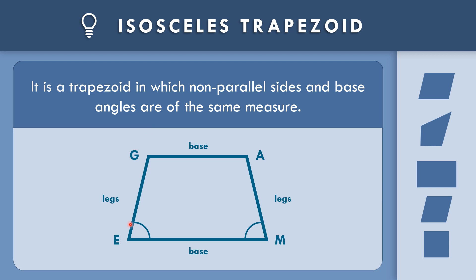The base angles are angle E and angle M — angle E is equal to the measurement of angle M. Another pair of base angles: angle G is equal to angle A, so whatever is the measurement of angle G, that equals the measurement of angle A. If we need to find angle G and angle E together, angle G plus angle E equals 180 degrees, because two consecutive angles of the legs are supplementary.